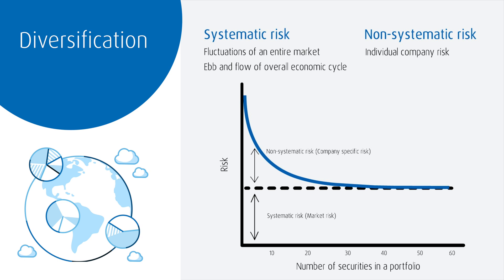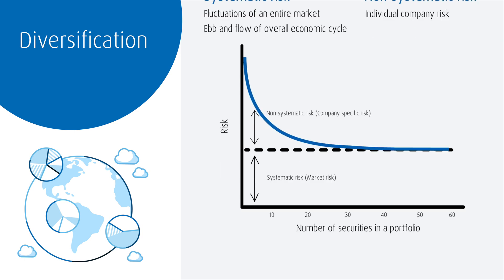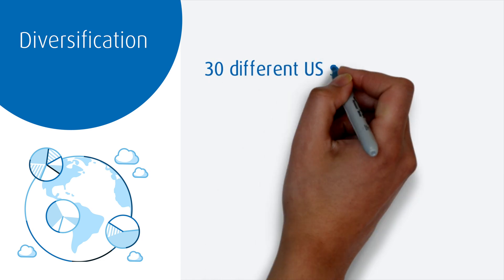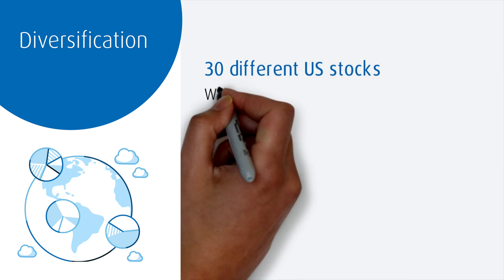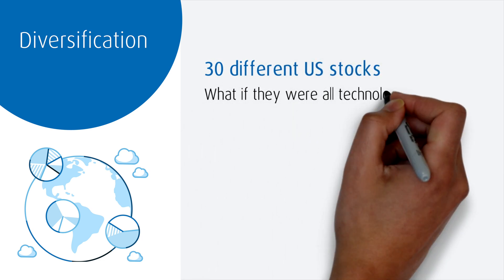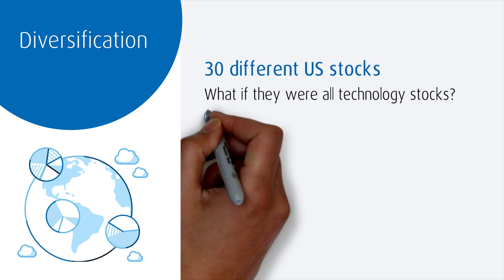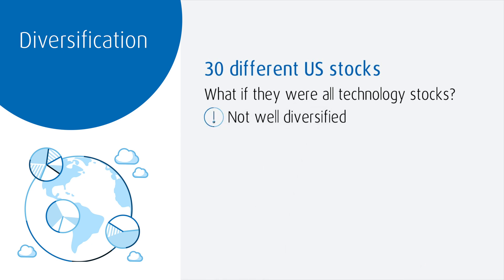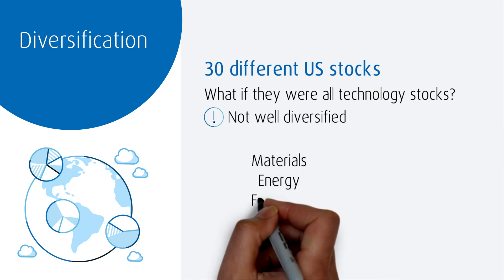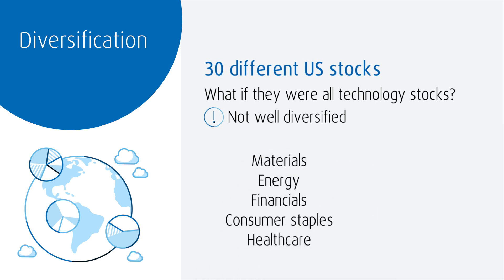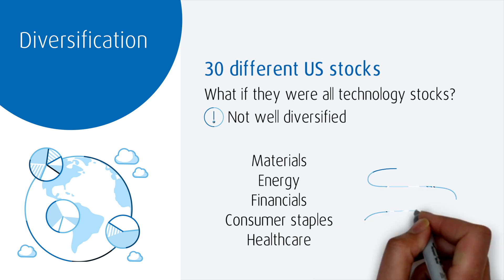But there are other ways to diversify as well. Let's say you had 30 different U.S. stocks — what if they were all technology stocks? That's not as diversified as holding 30 different stocks spread across different sectors of an economy, like materials, energy, financials, consumer staples, health care, and so on.